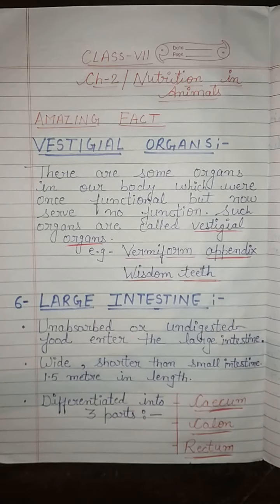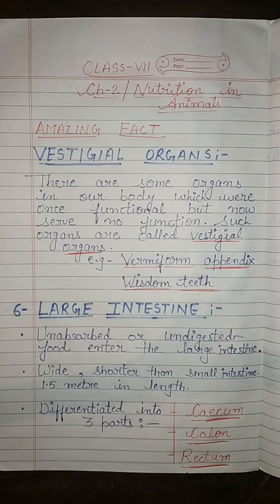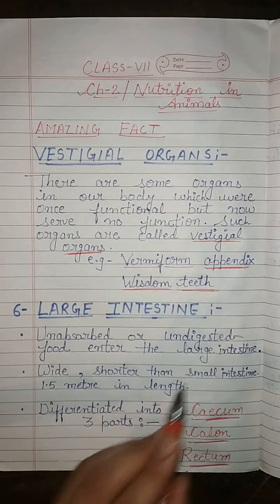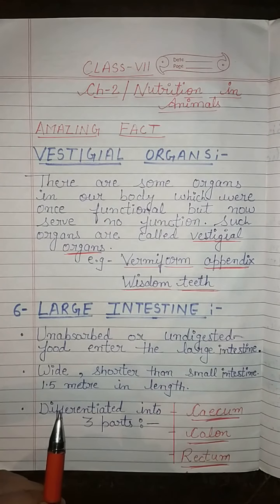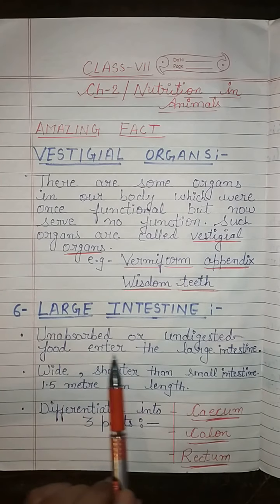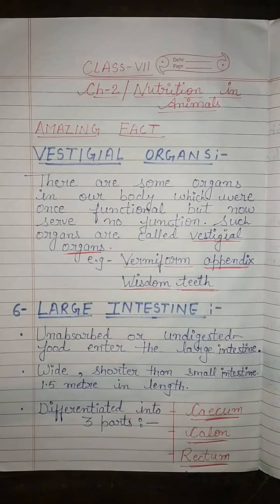Now moving to the main topic of the human digestive system, that is large intestine. Just recall — yesterday humne padha tha small intestine. Small intestine mein jo bhi food aapka digest ho gaya tha, woh aapka blood mein absorb ho gaya tha. But undigested food, ya phir keh sakte hain unabsorbed food, wahan absorb nahi hua tha. Phir woh food enter ho jayega large intestine mein, jo aaj hum padhne wale hain.